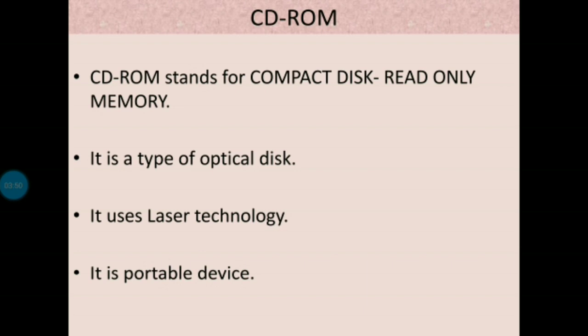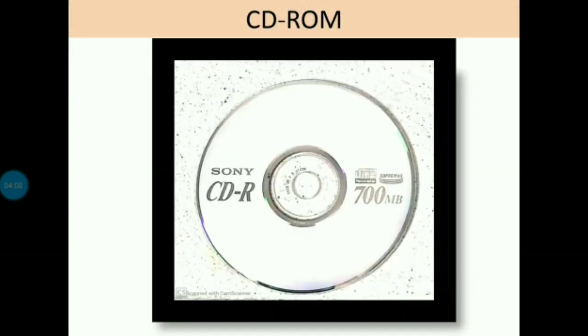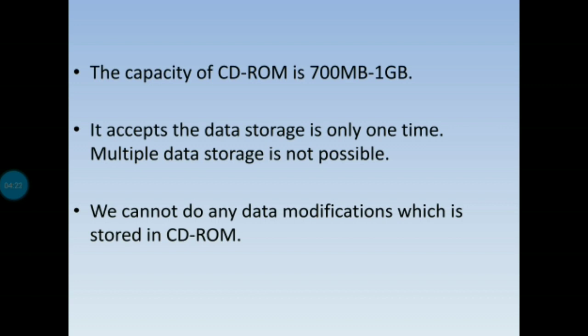Coming to CD-ROM. CD-ROM stands for Compact Disk Read Only Memory. It is a type of optical disk and it uses laser technology to store information. It is also a portable device. See the CD-ROM — how it looks like. The capacity of CD-ROM is 700 MB to 1 GB. It accepts data storage only one time — multiple times data storage is not acceptable, and we cannot do any modifications to data stored in CD-ROM.